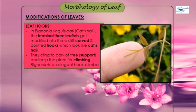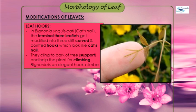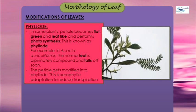Now comes leaf hooks, the third modification of leaves. In Bignonia, also known as cat's nail, the terminal three leaflets get modified into three stiff, curved, and pointed hooks which look like a cat's nail. They cling to the bark of trees for support and help the plant climb. Bignonia is an elegant hook climber.